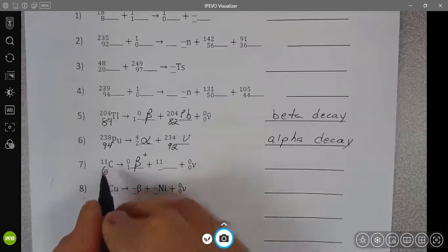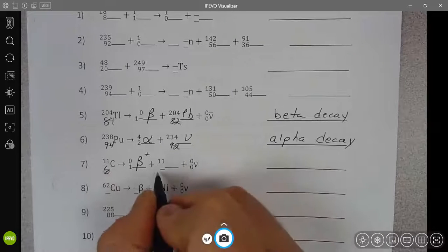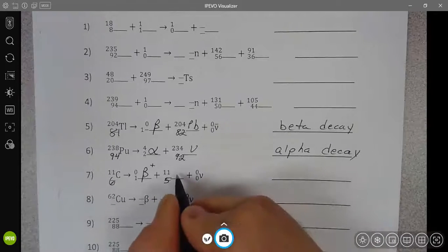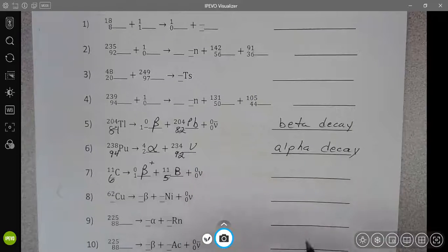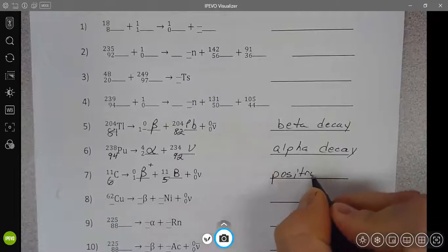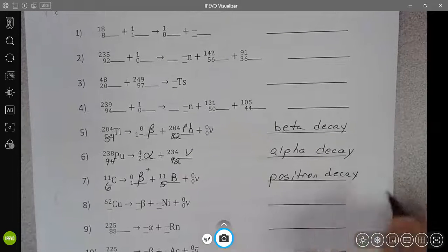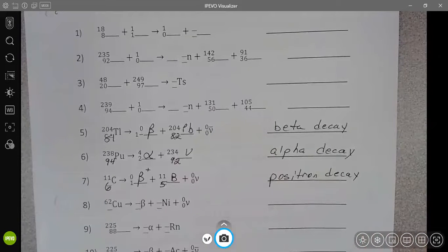But what that means is that our atomic number is going to go down by one. When that goes down by one, atomic number five is boron. And this would be positron decay. Sometimes people call it beta plus decay, but positron decay is a little bit more natural.